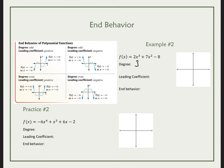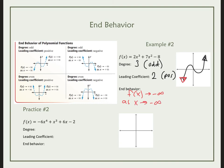The degree on this one is 3, which is an odd number. My leading coefficient is 2, which is positive. So it would match the odd-and-positive graph. On the left side, my function is going down forever to negative infinity as x is approaching negative infinity. On the right side, my function is approaching positive infinity as my x is approaching positive infinity.